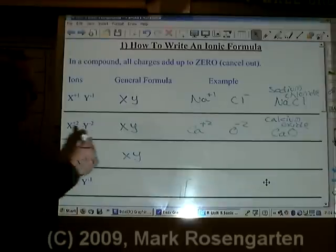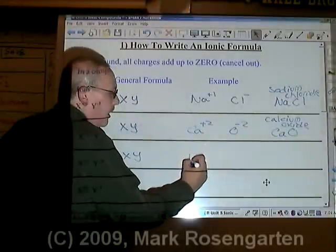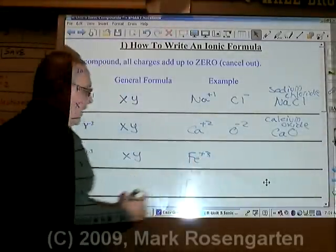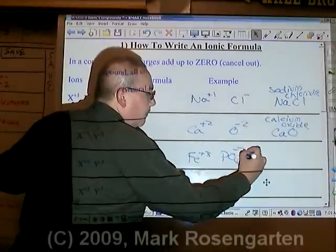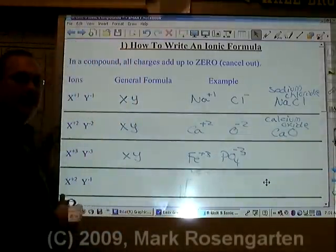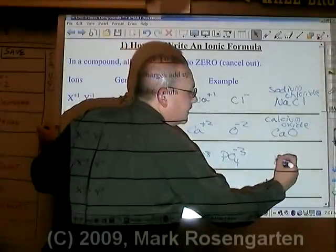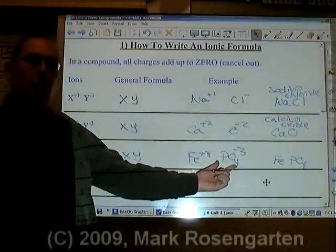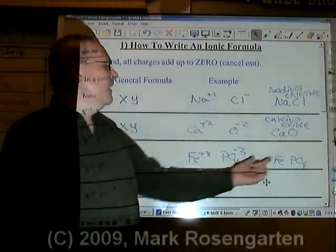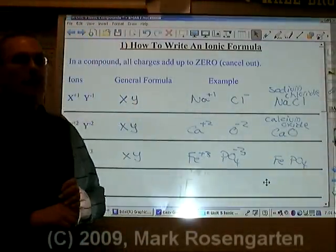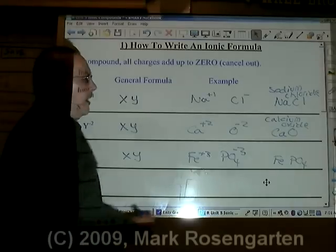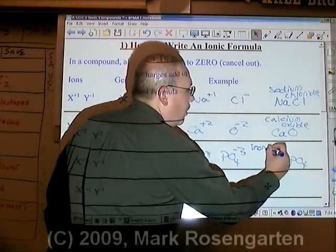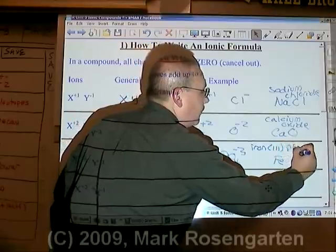X⁺³ Y⁻³. Fe is plus three. Phosphate, the polyatomic ion, is minus three. Therefore, they cancel each other out one to one. A polyatomic ion is one particle that remains together when it's put into a compound. The name of this compound is iron three phosphate.